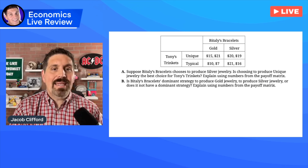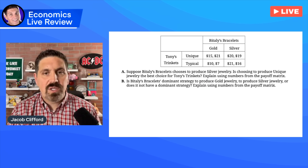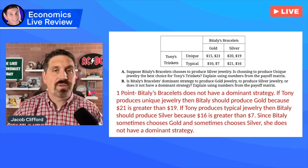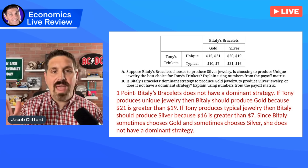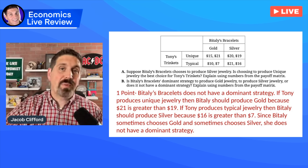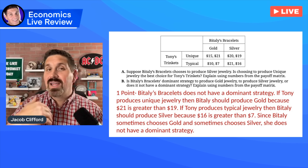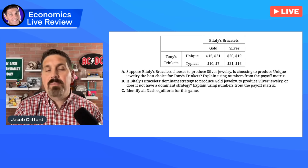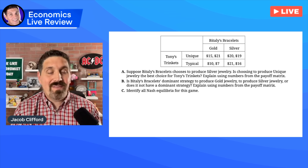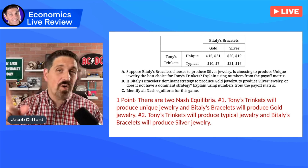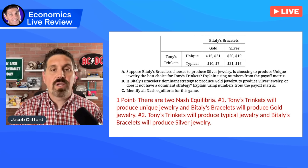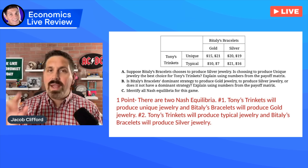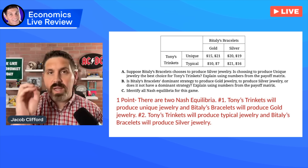In part B, they ask: is Bittenese Bracelets' dominant strategy to produce gold jewelry, to produce silver jewelry, or do they not have a dominant strategy? Explain using numbers. The right answer is they do not have a dominant strategy — you had to explain that concept with numbers. Sometimes they do one thing, sometimes the other. If you don't have the numbers in there, you don't get the point. For part C: identify all Nash equilibria for this game. That's a harder question because neither firm has a dominant strategy. There are actually two Nash equilibria: the first is where Tony does unique jewelry and Bittalee does gold; the second is where Tony does typical jewelry and Bittalee does silver.